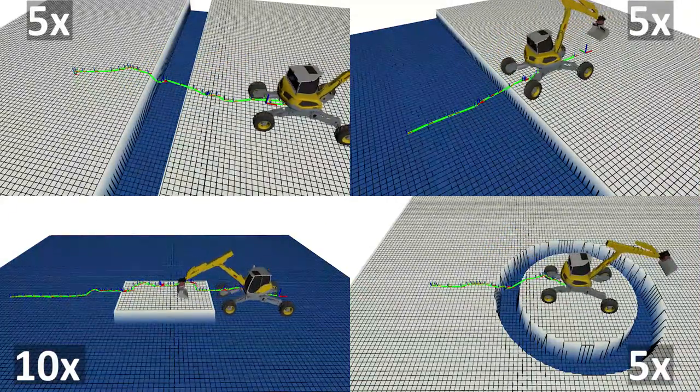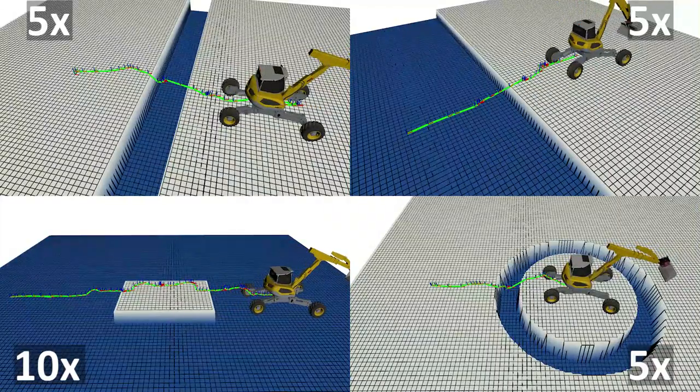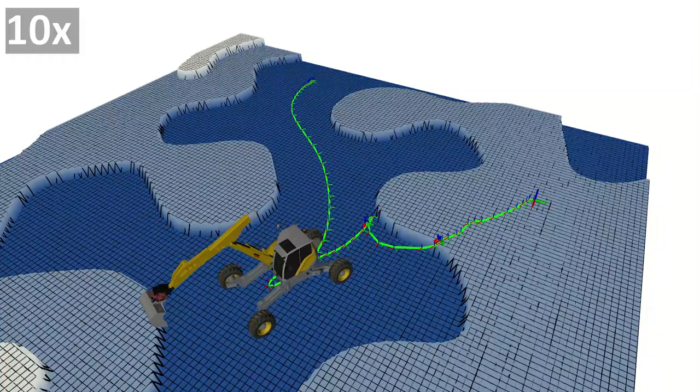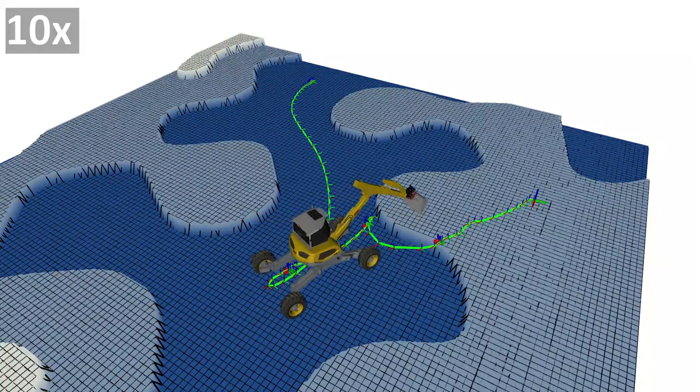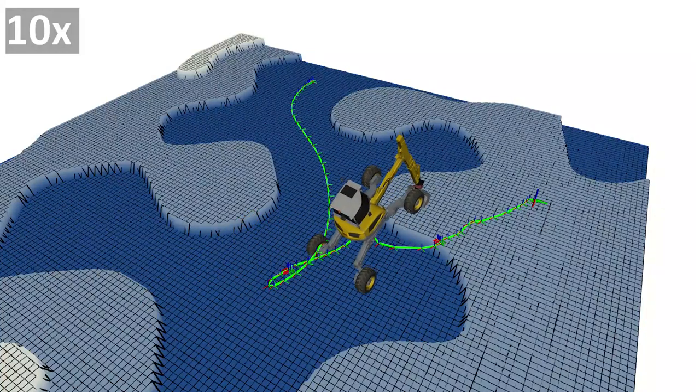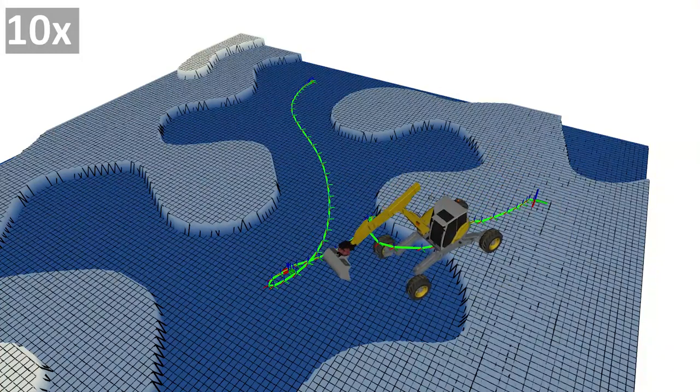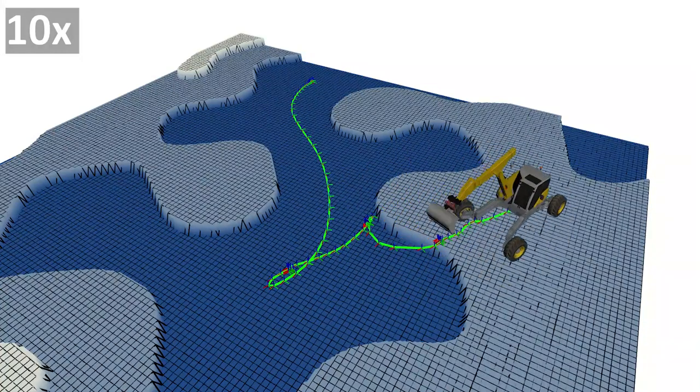The proposed two-stage planner can deal with challenging terrain features such as steps, gaps, and rough terrains. Furthermore, the planner successfully generalizes to combinations of these terrain features. By using the RRT as a backbone, we can discover global paths and navigate around untraversable terrain.